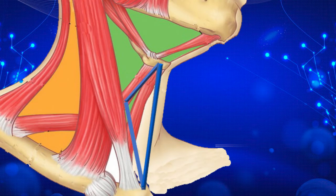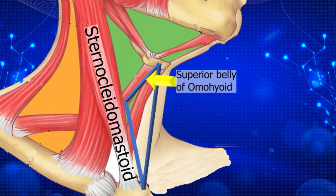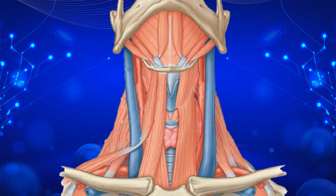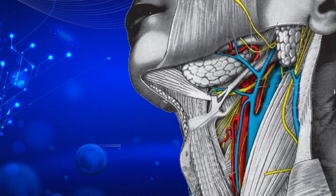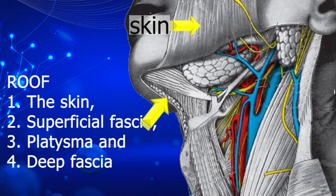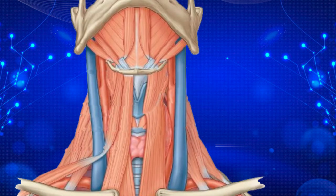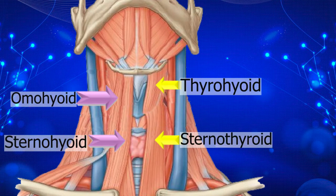We will look at the muscular triangle. The muscular triangle is bounded anteriorly by the median line of the neck from the hyoid bone to the sternum. Posteriorly and inferiorly, it is bounded by the anterior margin of the sternocleidomastoid, and posteriorly and superiorly by the superior belly of omohyoid. The floor is formed by the sternohyoid muscle and the sternothyroid muscle. The roof is formed by the skin, superficial fascia with platysma, and then the deep cervical fascia. The major contents of this triangle are the muscles: omohyoid, sternohyoid, sternothyroid and the thyrohyoid muscle.